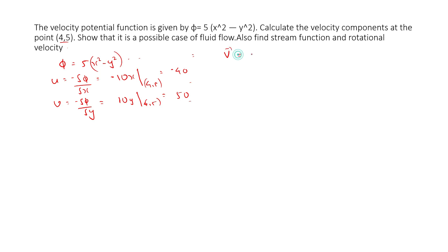So the velocity vector can be written as u i cap plus v j cap. This is equal to -40 i cap plus 50 j cap.